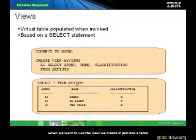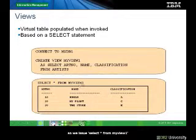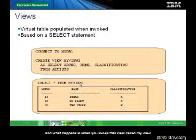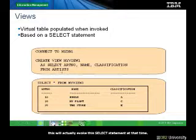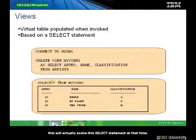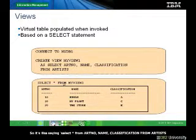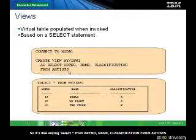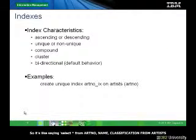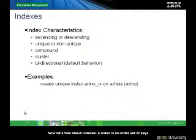When we want to use the view, we issue SELECT * FROM MyView. What happens is when you invoke this view called MyView, it will actually execute the underlying SELECT statement at that time — essentially saying SELECT * FROM artist with the art_name and classification columns.